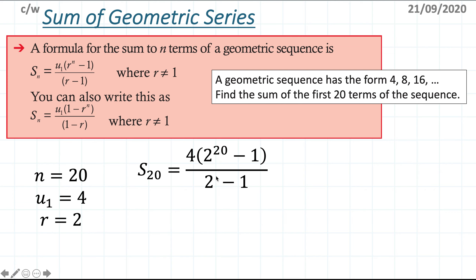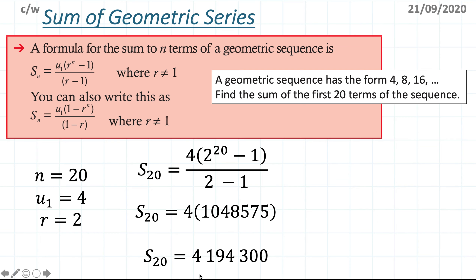So S20 = 4 times (2 to the power of 20 minus 1) divided by (2 minus 1). Be careful to match the power with the subscript n, and note the denominator has no power. Simplifying gives 4,194,300 — quite a large number, showing how quickly geometric sequences grow.